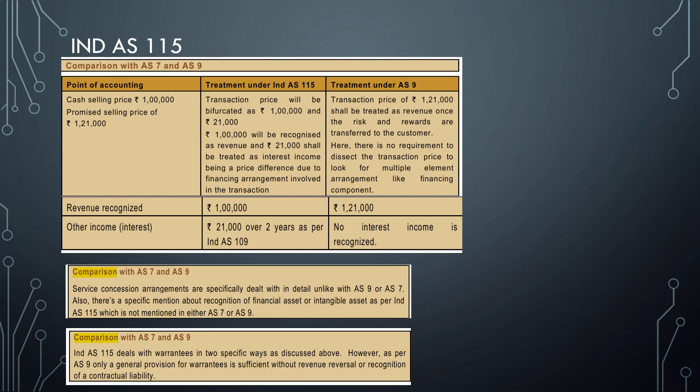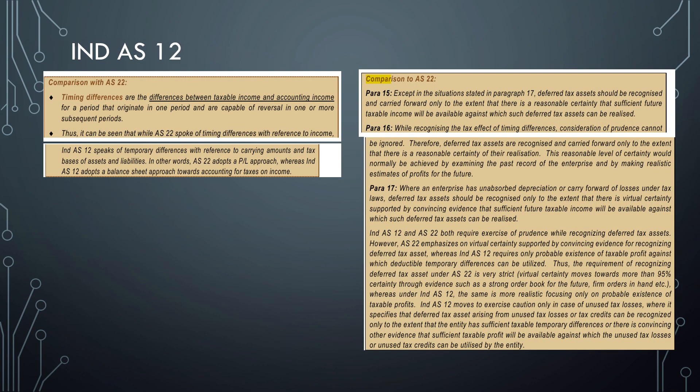Next one, service concession arrangements - a very important question. I also shared a video on this, do check it out. It's listed in page 75 of your study material. In IND AS 115, it's specifically dealt with, but AS 7 and AS 9 do not talk about the accounting treatment for service concession arrangements. And lastly, IND AS 115 deals with warranties in two specific ways. However, in AS 9, only a general provision for warranties is sufficient without revenue recognition or reversal of a contractual liability. That's typically about AS 9 versus IND AS 115.